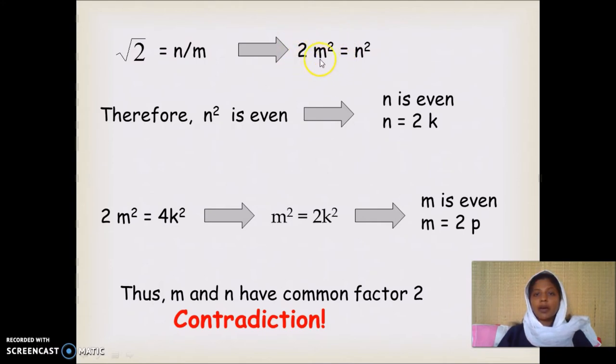Since this is a multiple, left hand side is a multiple of 2, we know that the result is an even number. That is 2m squared is an even number. That means n squared is an even number.